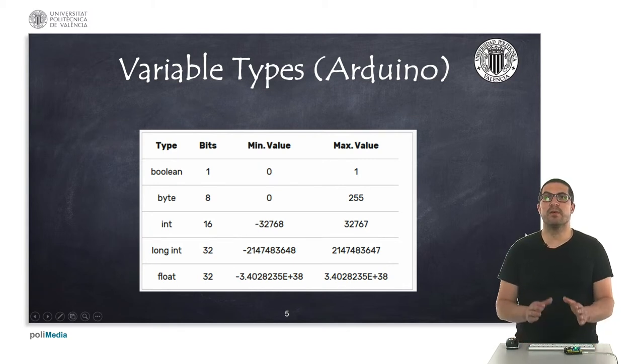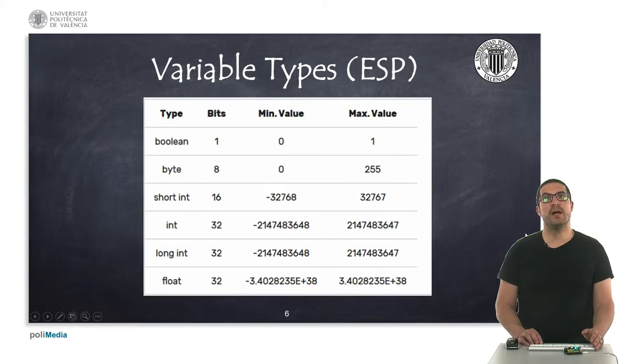Depending on the variable we have a range, so we can store values within these specified ranges that you see here in the table. But for the ESP processor this is slightly different because we have a different type called the short int that actually has the same size as the integer in Arduino, so it's a 16-bit variable. Then we have the int which occupies 32 bits and the long int which also occupies 32 bits as well as the float number.